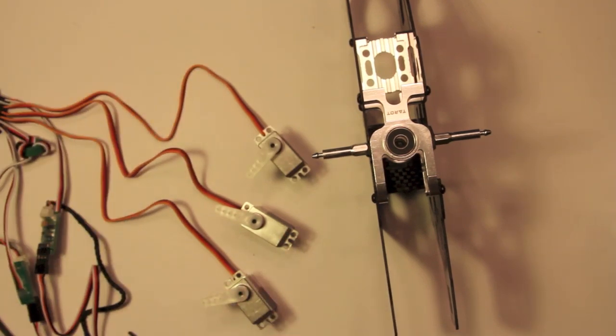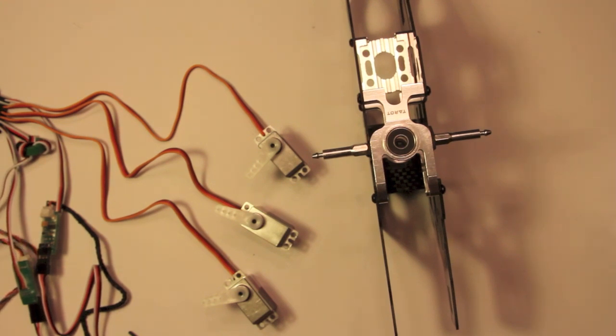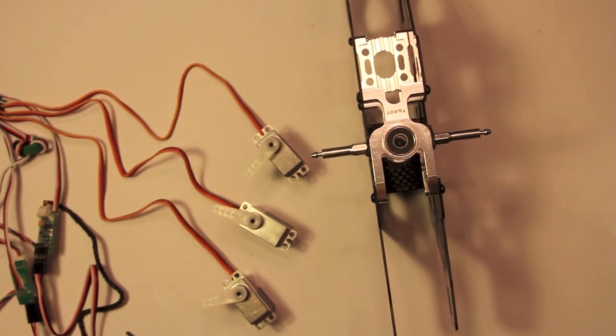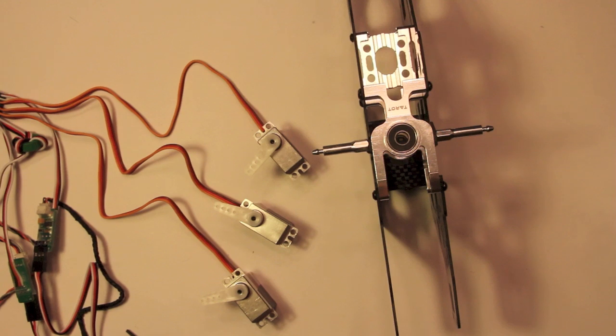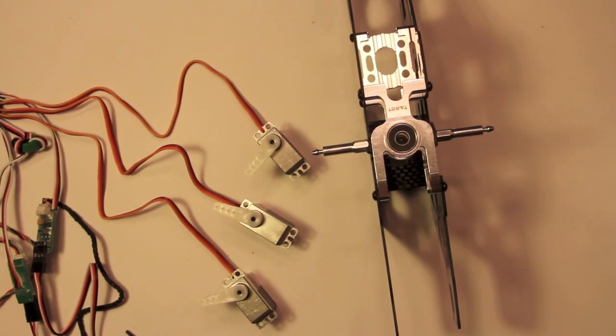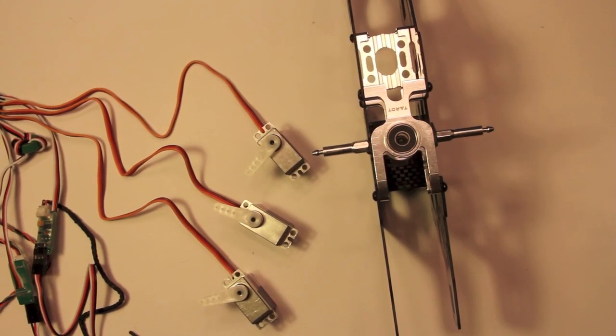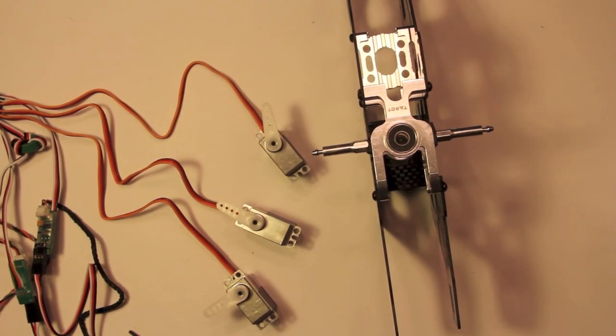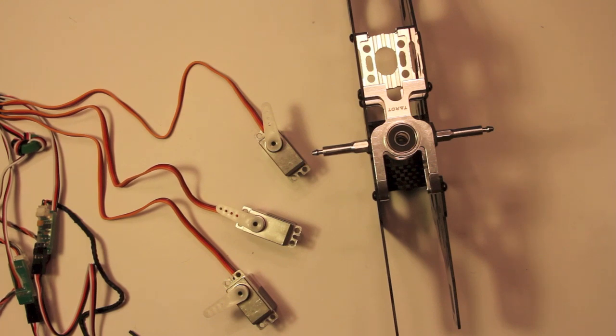Now I'm going to apply power to the ESC by plugging in the battery, which is going to power on the gyro, which is going to power on the servos, and you should see them snap to what it believes for them to be a center position. Okay, so they are centered up.